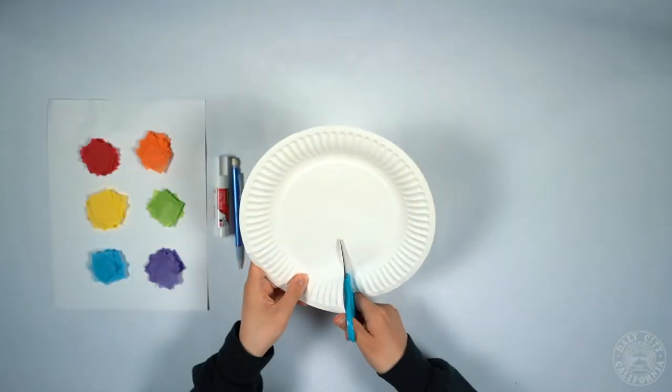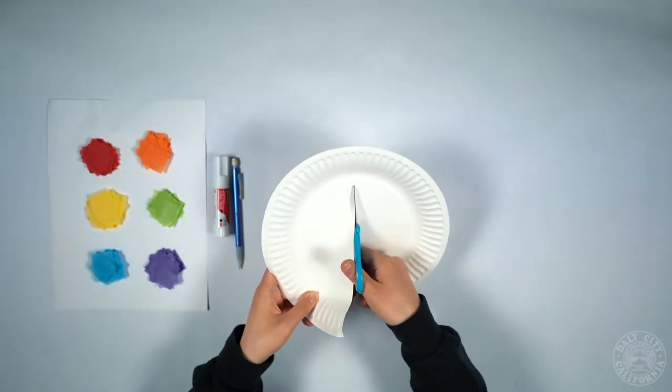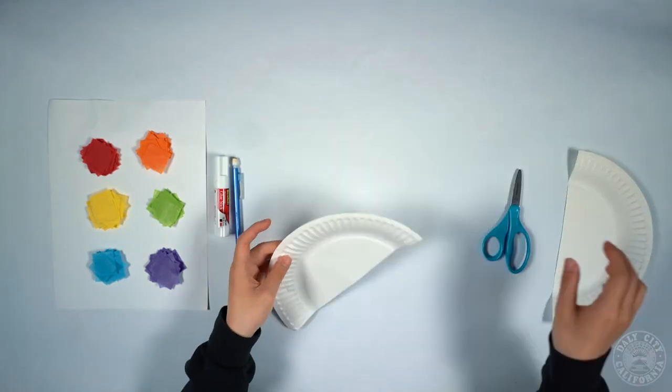So the first thing you want to do is cut your paper plate in half. We're only going to be using half of the paper plate.